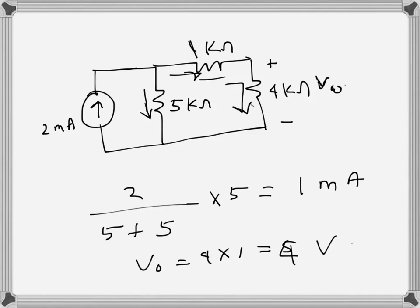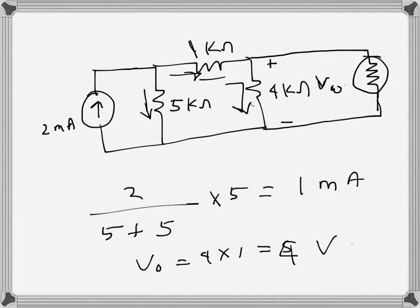What we are interested in now is how the voltmeter resistance affects the reading when we measure it using a voltmeter. Ideally a voltmeter will have infinite internal resistance, but the one we are using has a resistance of just 6 kilo ohms, which is a finite value. Let's see what V0 reading the voltmeter will give, connected across the 4 kilo ohm resistance.